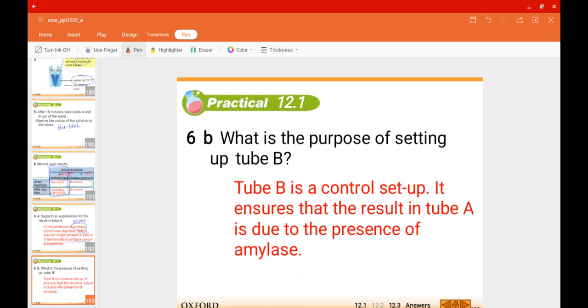Because in test tube B there is still starch present, there was no digestive enzyme, there was no amylase. Hence, tube B is used as a control setup to make sure that in tube A, the result was due to the presence of the amylase.